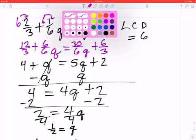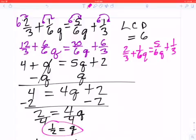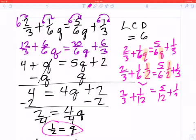So I'm going to write the original problem. So 2/3 plus 1/6Q is equal to 5/6Q plus 1/3. And I'm going to substitute the 1/2 in for the Q. So this becomes 2/3 plus 1/6 times 1/2 equal to 5/6 times 1/2 plus 1/3. So all I did was take the original equation and replace that Q with 1/2. I'm going to go through and do my multiplication first because order of operations says so. So this becomes 2/3 plus 1 over 12. This side becomes 5/12 plus 1/3.